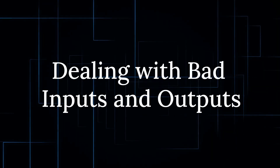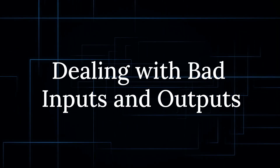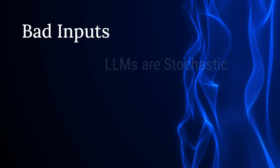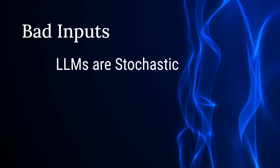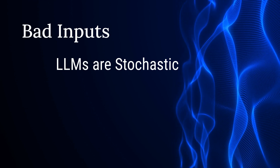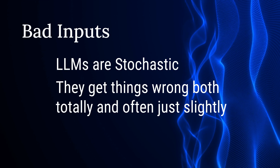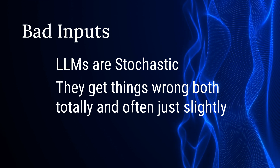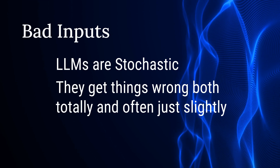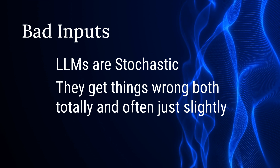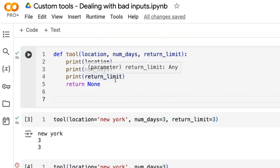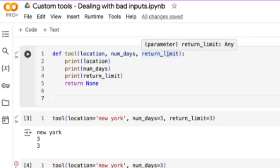Next I want to talk about dealing with bad inputs and outputs from LLMs. LLMs are stochastic — whenever you prompt an agent to make a choice around a tool, there's an element of things that can go wrong. They can go totally wrong, but often they go just slightly wrong. When you're getting an LLM to generate something that will be used in a tool, this becomes really crucial.